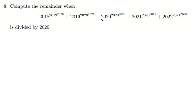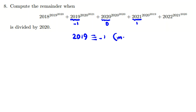If we consider this sum divided by 2020: the first term is zero, the second is 1 to the power of something which is congruent to 1 mod 2020, and 2019 is congruent to negative 1 mod 2020, so negative 1 to an even power gives positive 1. So we only need to consider 2018 to the power of this term, and 2022.